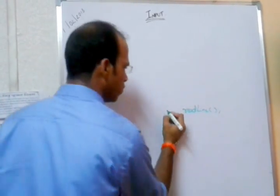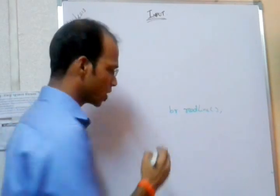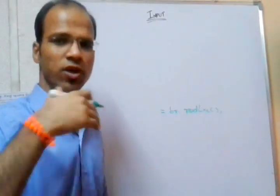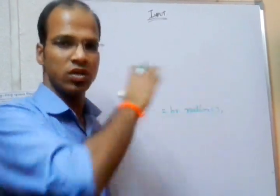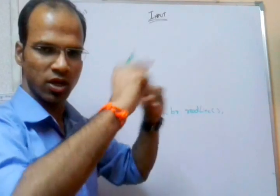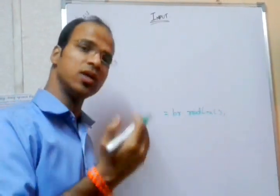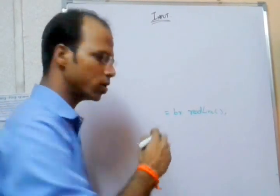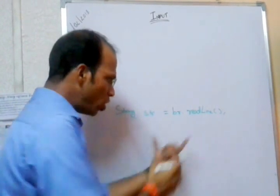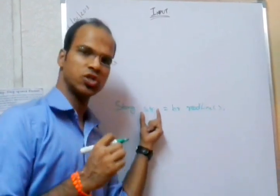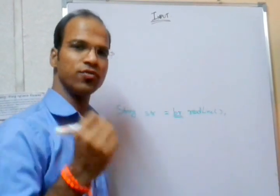Starting with 'what' - what will the user input? When you talk about readline, this is your method. The readline method is non-static, so you have to work with an object. Let's say br is the object of BufferedReader. It will give you a string, because the readline method is written in such a way that it returns the whole line that the user inputs. Since we are getting a string, we have to store it in a string variable, so we create a string object like str.